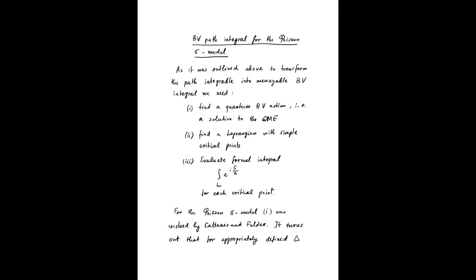Now, BV path integral for the Poisson-Sigma model. As it was outlined above, what we want to do is transform our not integrable path integral into a manageable BV integral. For this we need, first, find a quantum BV action, a solution to the master equation; then find a Lagrangian with simple critical points of S_BV; and then evaluate the formal integral for each critical point. This gives the natural candidate for what we should call a path integral in a given gauge theory.